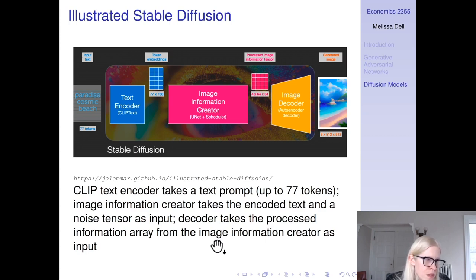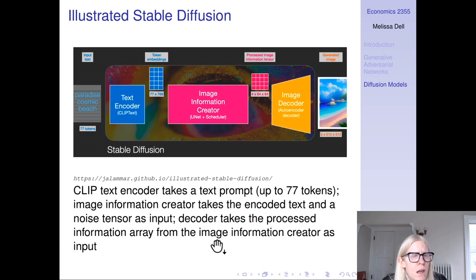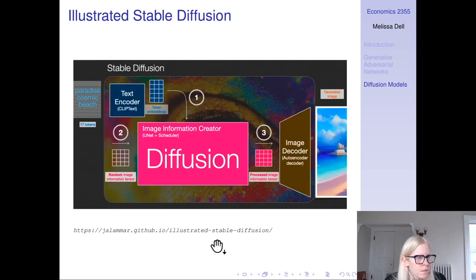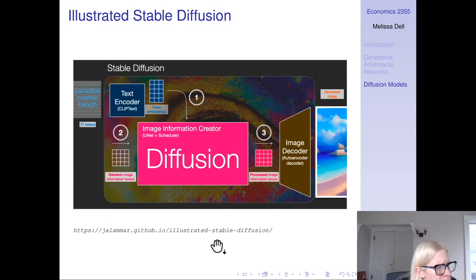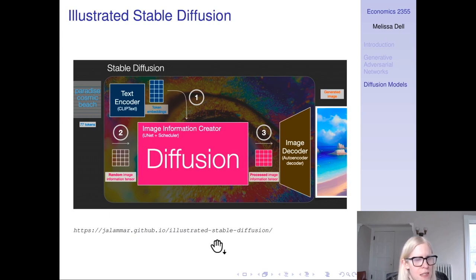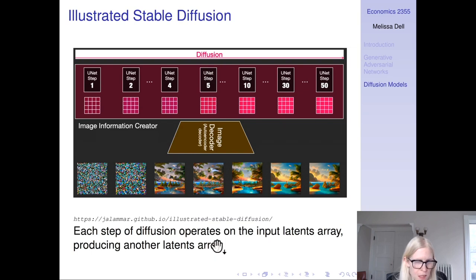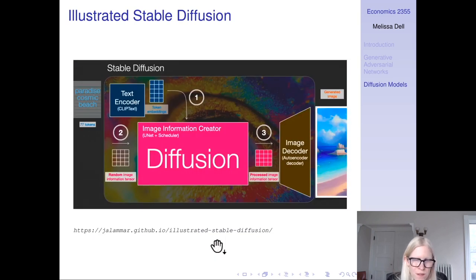Those encodings are inputs into the image information creator, which creates a processed image information tensor that the decoder then takes and turns into an image. You start with a random image information tensor, combine that with the text embedding, and feed it into the image information creator. It gives you a processed image information tensor, which is then decoded into the image. Let's delve into this pink box, which is where diffusion happens.